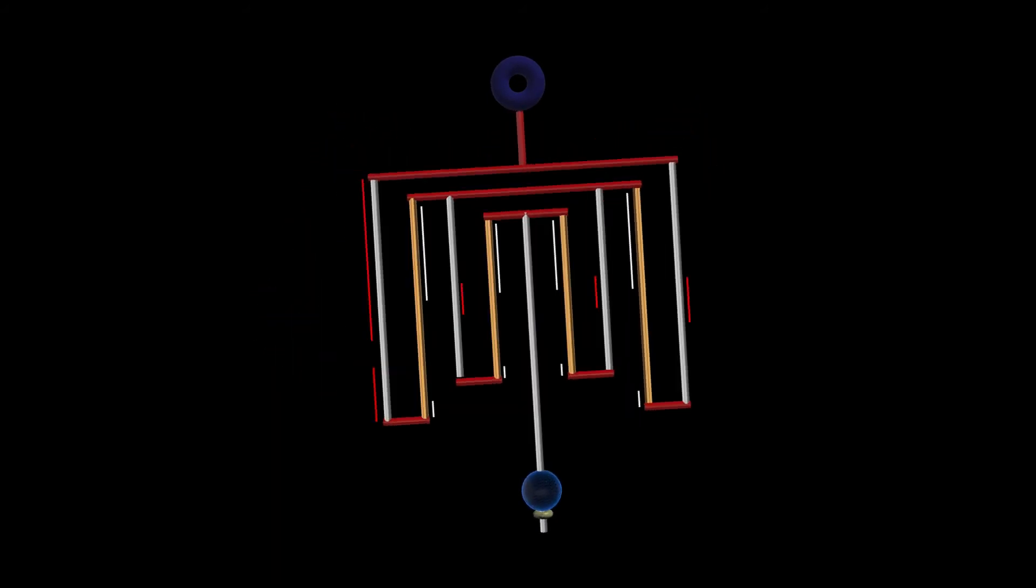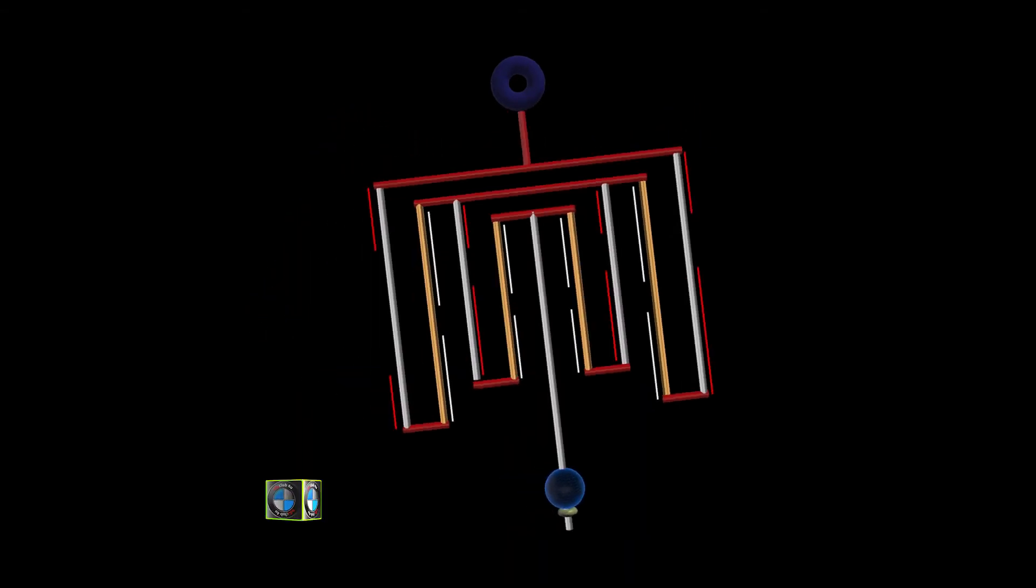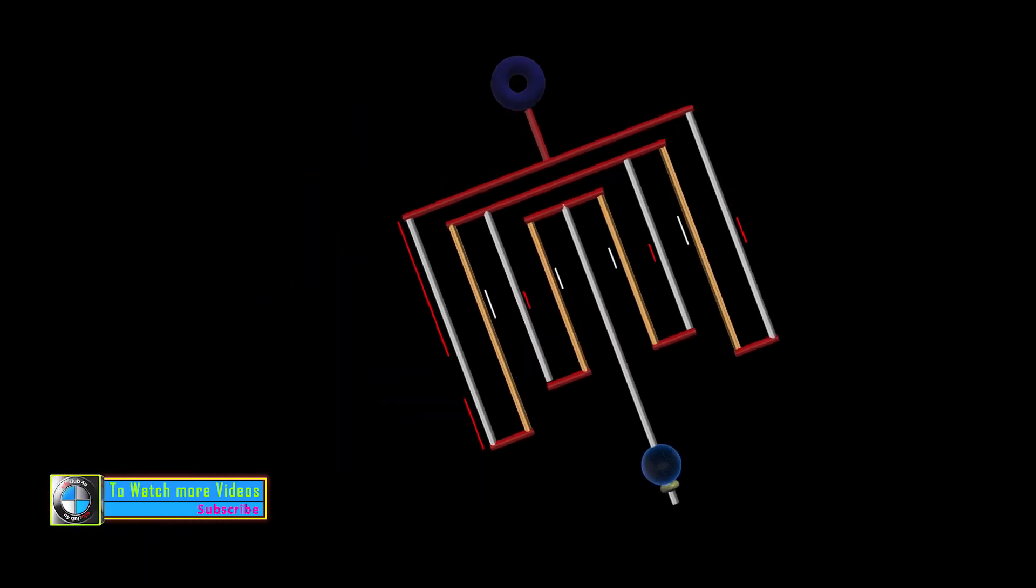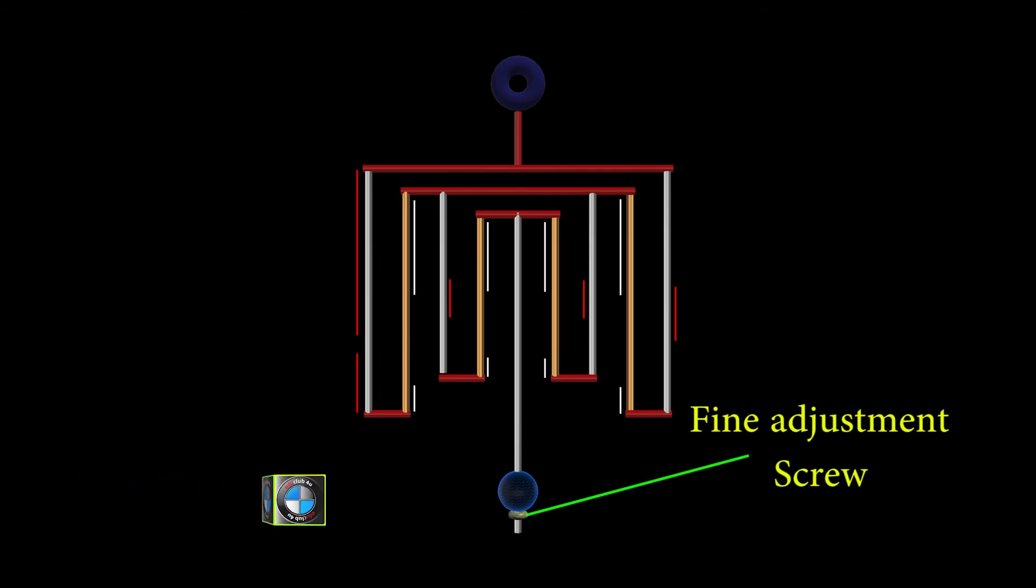Thus, the effective length of the pendulum remains maintained throughout the season, thereby giving an accurate time. A screw is provided to adjust the effective length by moving it up and down. It provides a facility of fine adjustment of effective length if required.